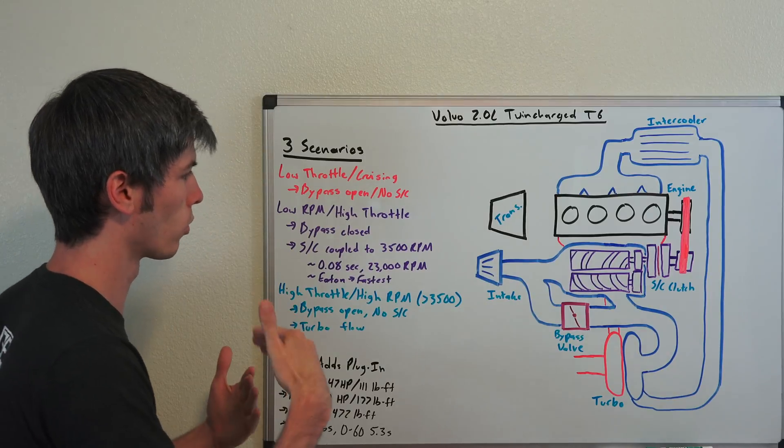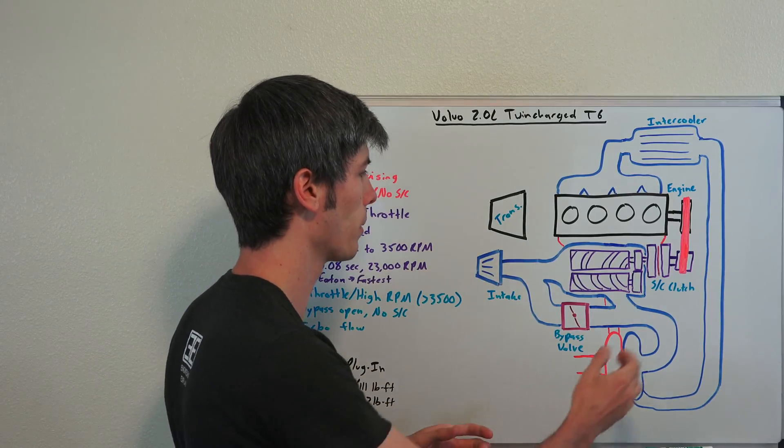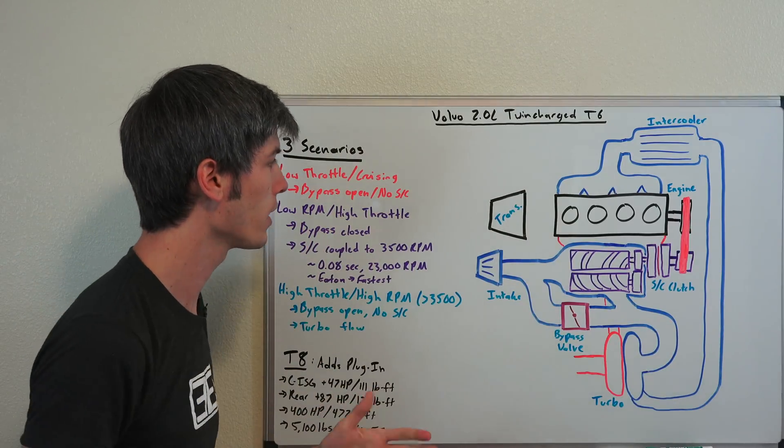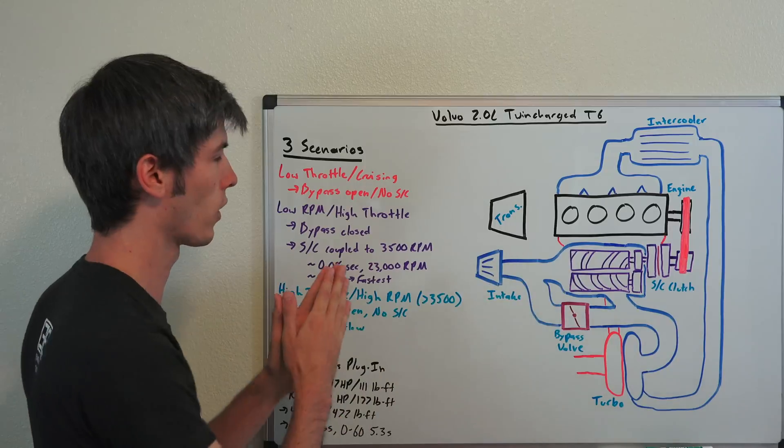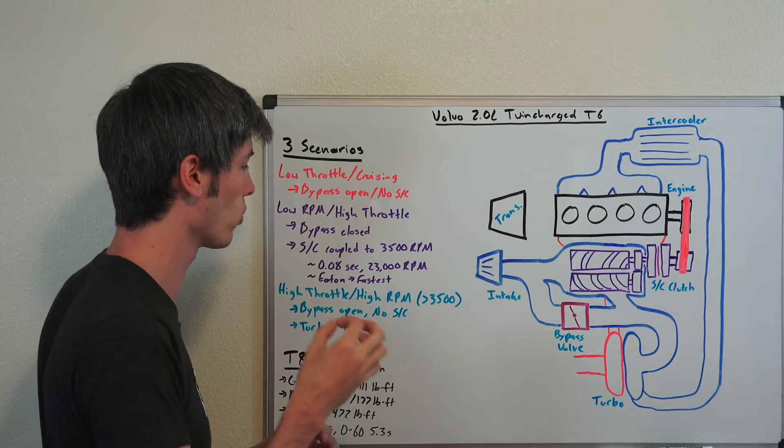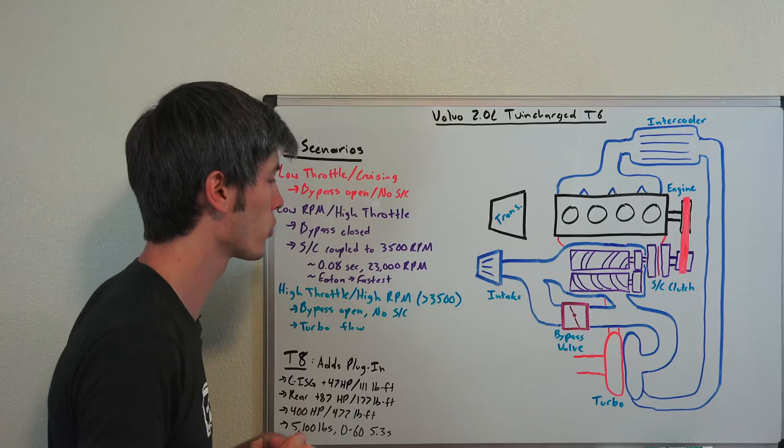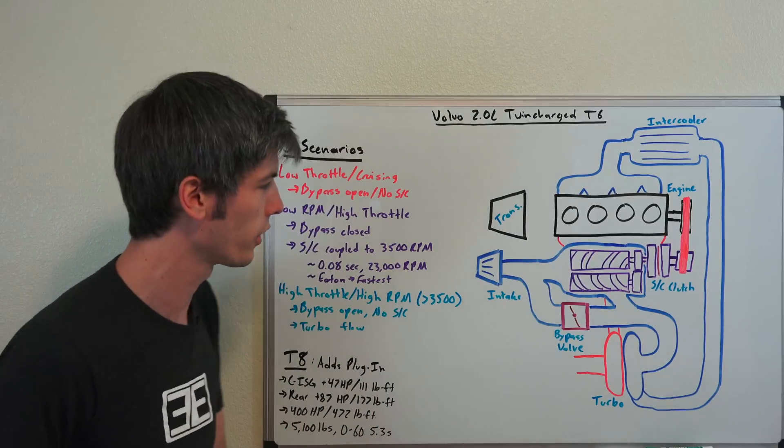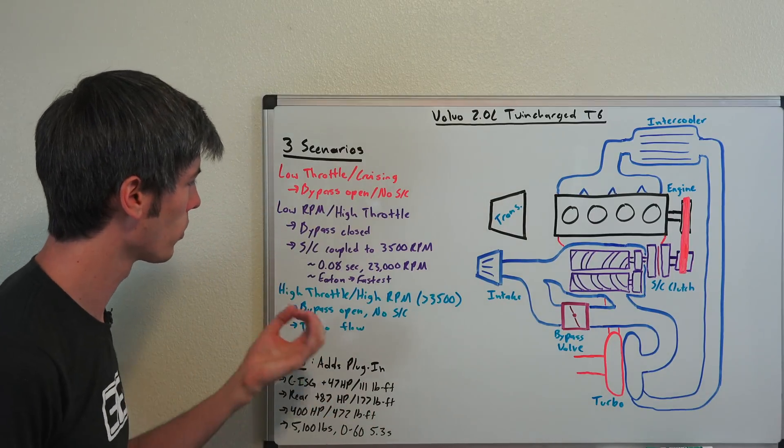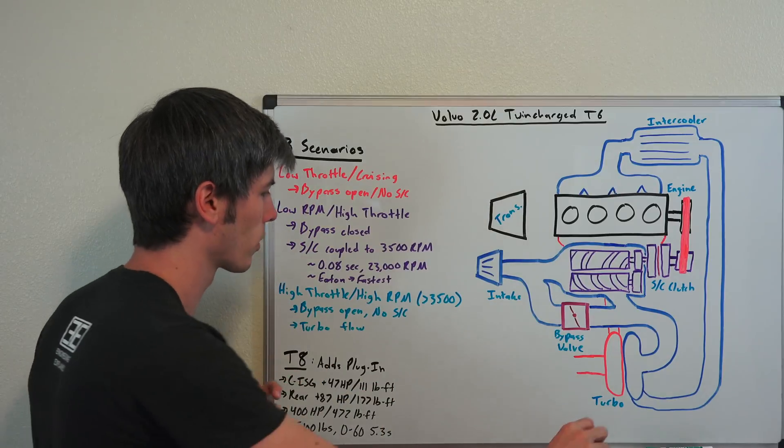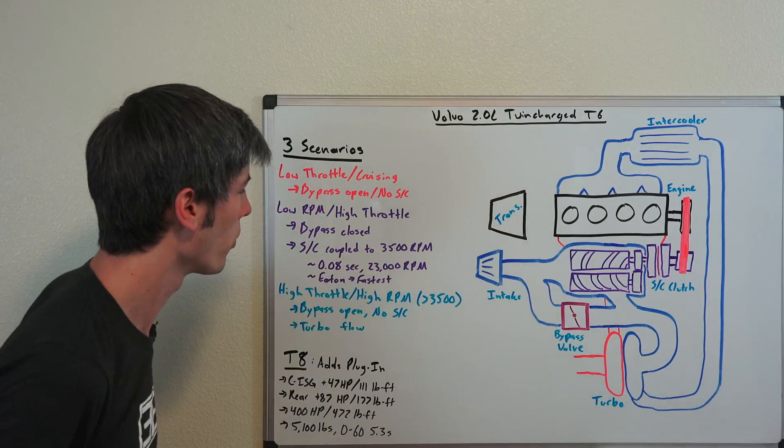So this supercharger will run up to 3,500 RPM before this clutch is disengaged. And it can engage if it's not, let's say you're at a low throttle and then you floor it. It can engage as fast as 8 one-hundredths of a second, and it will spin up to about 23,000 RPM. So I was reading a Road and Track article on this supercharger, and they were saying that Eaton was claiming that this was their fastest spinning supercharger. And to give you a quick little visual of what is 0.08 seconds?